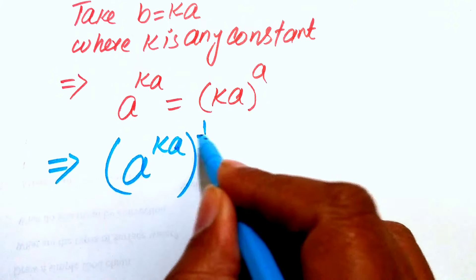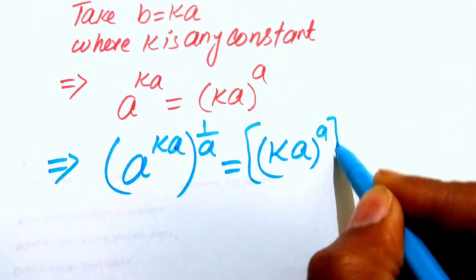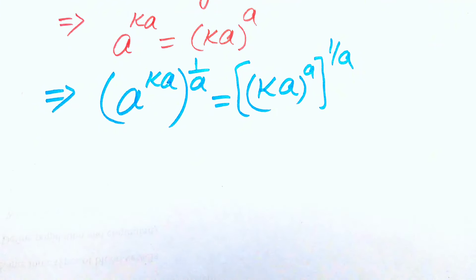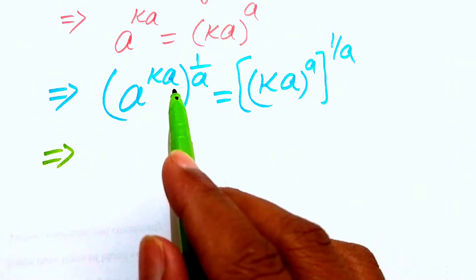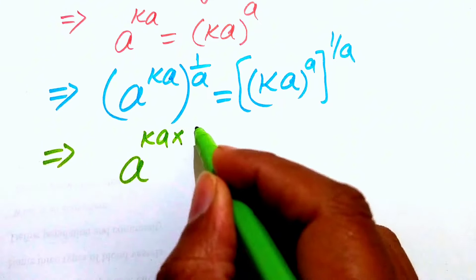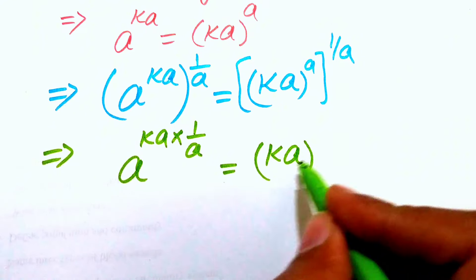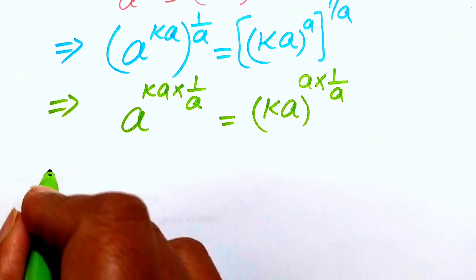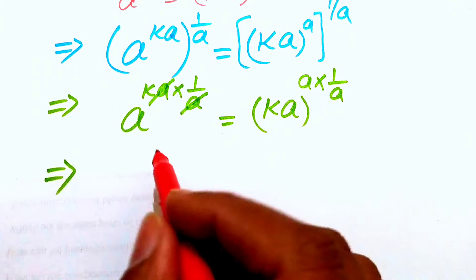We write: a to the power of ka, whole power one over a, equals ka to the power of a, whole power one over a. Since exponents multiply, this becomes a to the power of ka times one over a, and similarly ka to the power of a times one over a.